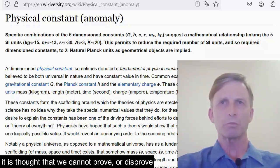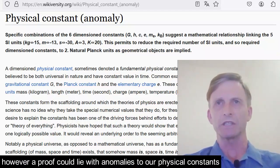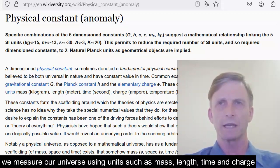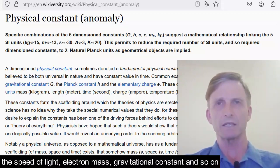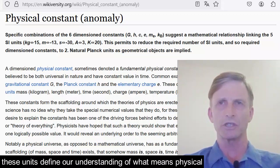It is thought that we cannot prove or disprove that our universe is a simulation. However, a proof could lie with anomalies in our physical constants. We measure our universe using units such as mass, length, time, and charge, and to do that we use physical constants such as the speed of light, electron mass, gravitational constant, and so on.